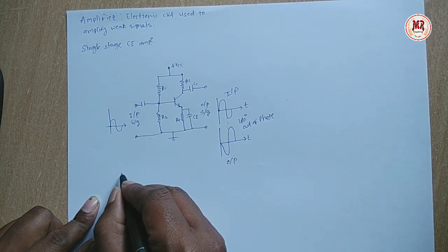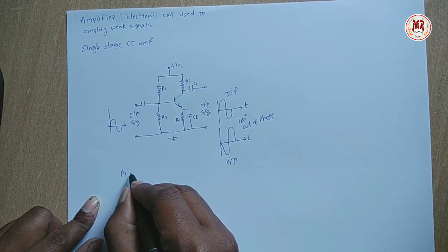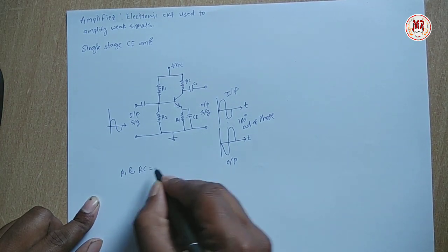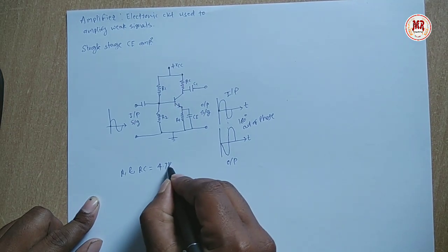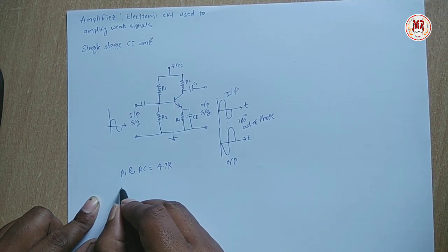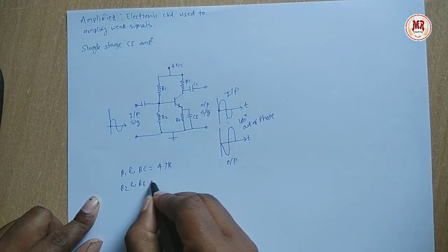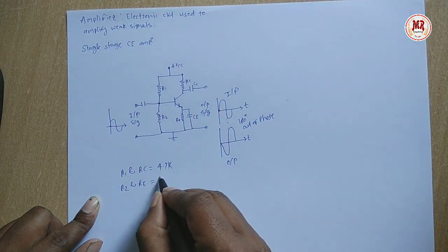Now values of the components. First resistance is R1 and RC. Value of both resistances, 4.7K. Now R2 and RE, 1K both.